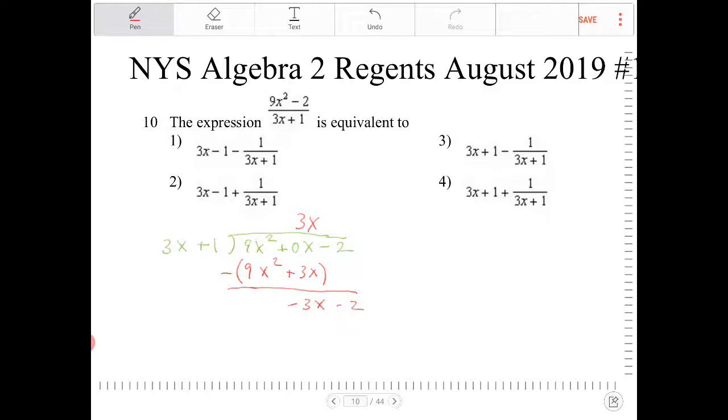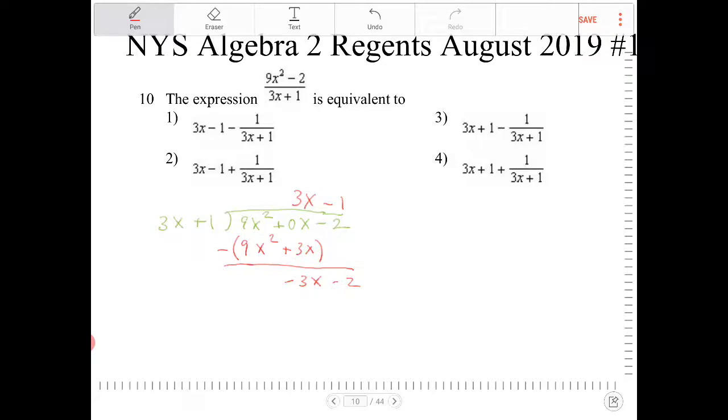My goal now is to eliminate the negative 3x. So what do I multiply 3x plus 1 by? I'm going to multiply it by negative 1. So negative 1 times 3x plus 1 will become negative 3x minus 1, and I'm going to subtract that from negative 3x minus 2.